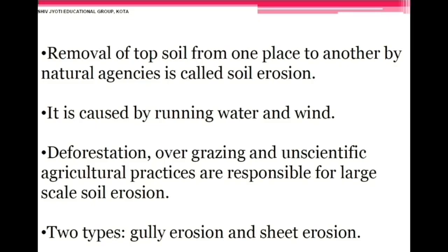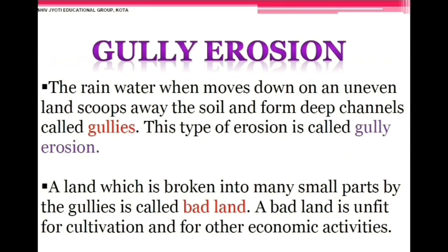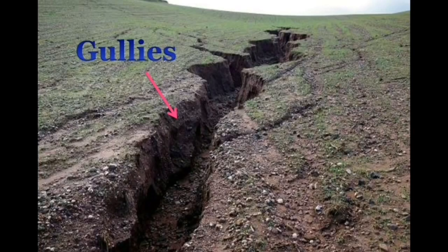Soil erosion is the removal of topsoil from one place to another by natural agencies. It is caused by running water and wind. Deforestation, overgrazing, and unscientific agricultural practices are responsible for large-scale soil erosion. There are two types: gully erosion and sheet erosion. In gully erosion, rainwater moving down an uneven landscape washes away soil and forms deep channels called gullies. Land broken into many small parts by gullies is called bad land, which is unfit for cultivation.